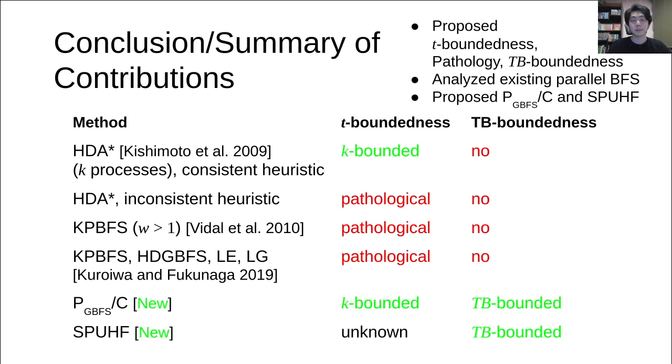In this work, we propose T-boundedness, pathology, and TB-boundedness measures to compare parallel and sequential BFS. We analyze existing parallel BFS methods theoretically, and show that parallel A-star with a consistent heuristic is K-bounded, but other parallel BFS methods are pathological relative to sequential BFS methods. Finally, we propose P-GBFS-C, which is K-bounded and TB-bounded, and SpUHF, which is TB-bounded parallel GBFS. Thank you for listening.